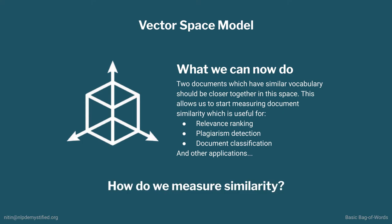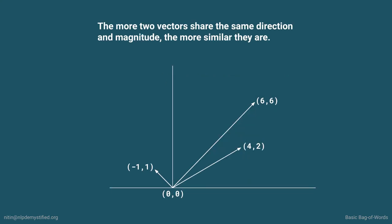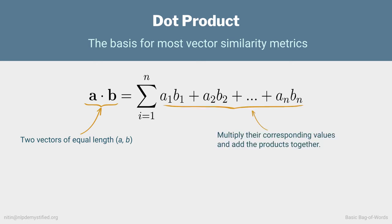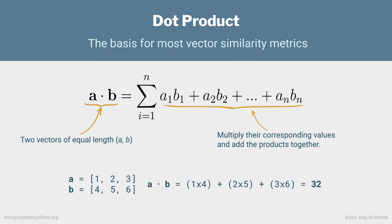So how do we measure similarity? The more two vectors share the same direction and magnitude, the more similar they are. To calculate the similarity, we need to revisit the dot product, which is the basis for most vector similarity metrics. To calculate the dot product of two equal-length vectors A and B, you simply multiply their corresponding components and add the results together. So if we have vectors [1,2,3] and [4,5,6], their dot product is 1×4 plus 2×5 plus 3×6, which is 32.